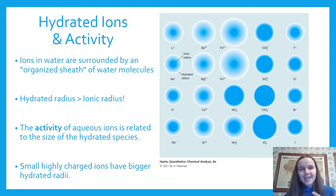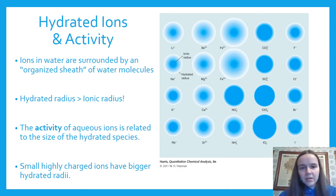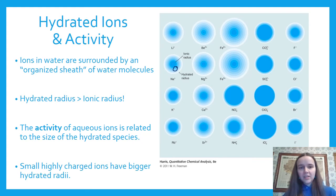What that means is that the hydrated radius is going to be bigger than the ionic radius. If you look at this plot on the right-hand side, the core of the ion, which is the dark blue here, is much smaller than the hydrated radius. Activity is related to the size of this hydrated radius, and smaller, highly charged ions have bigger hydrated radii.